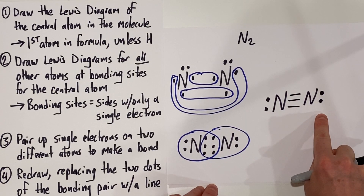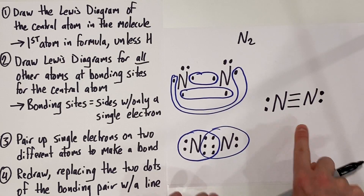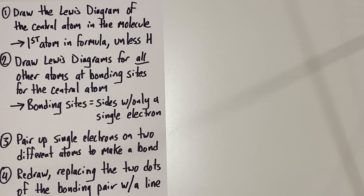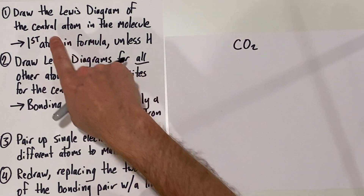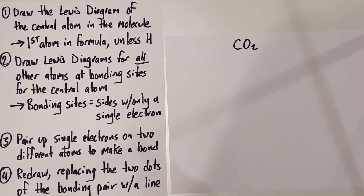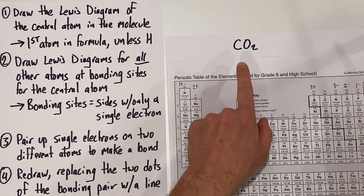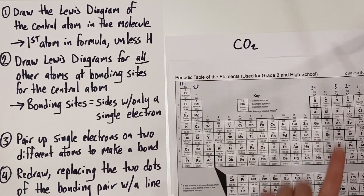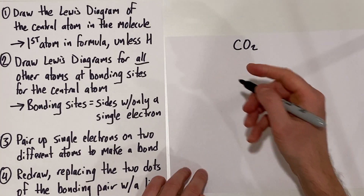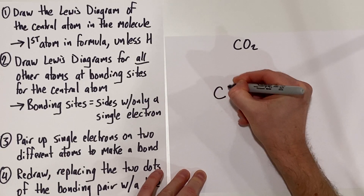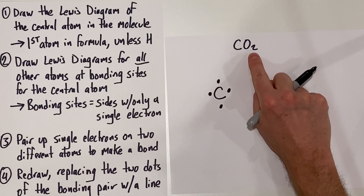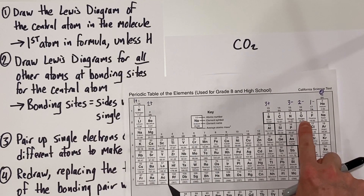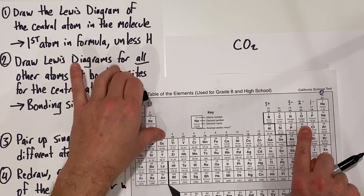So there we go — we just drew a Lewis dot diagram for the N2 molecule. Let's go ahead and do another one. This one is going to be carbon dioxide. Draw the Lewis dot diagram for the central atom in the molecule. Since we have two different atoms, we've got to pick one to be the central atom — it's going to be carbon because it's listed first. Carbon has four valence electrons; it's in group 14. And I'm going to have to draw two oxygen atoms, and each oxygen atom is going to have six valence electrons because oxygen is in group 16.